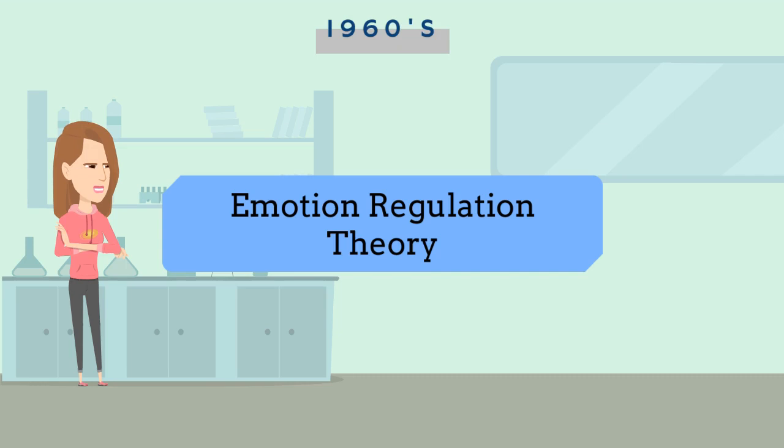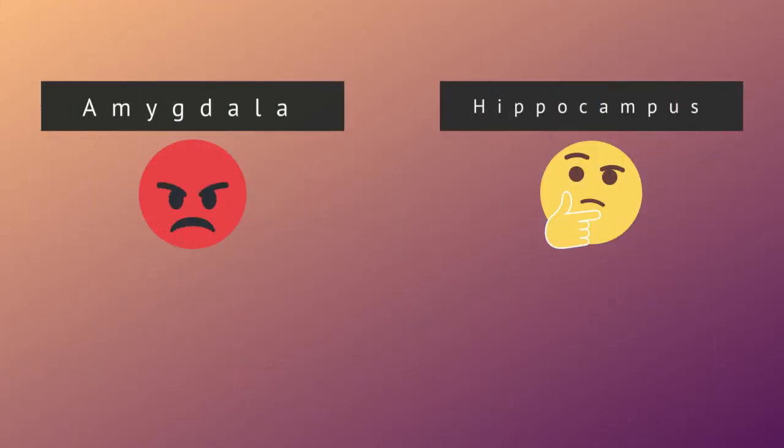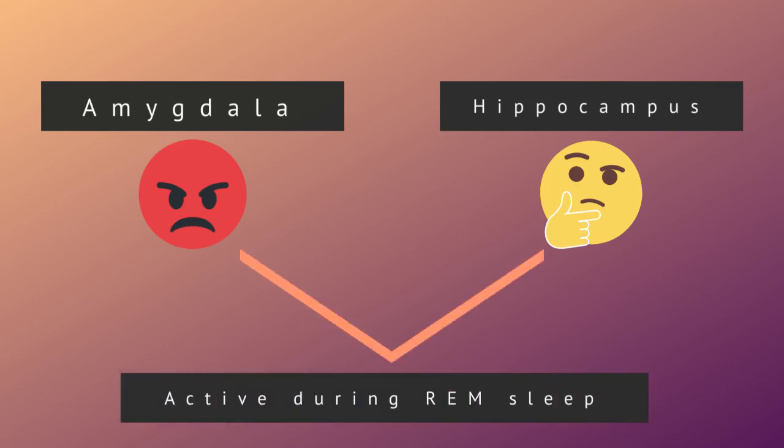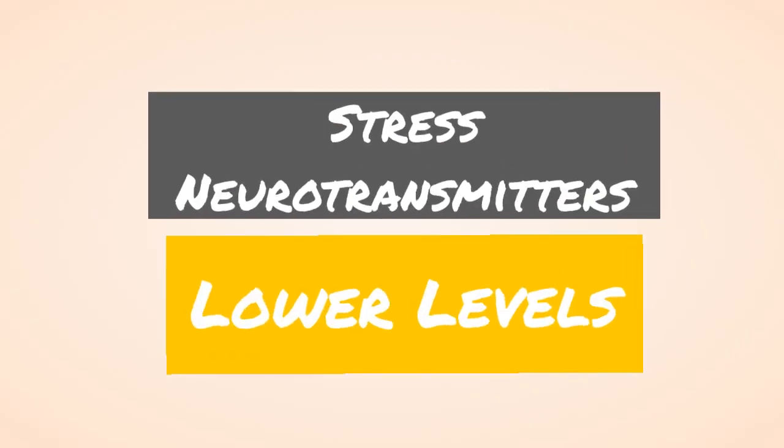This segues into another theory first discussed in the 60s called the Emotion Regulation Theory, which suggests that dreams help us cope with trauma and handle our emotions. Scientists have found that the amygdala, our brain's emotional center, and the hippocampus, our brain's memory center, are active during REM sleep, implicating dreaming with emotions and memory. Not to mention, research shows that stressed neurotransmitters are at lower levels during sleep, which helps the brain heal emotionally.